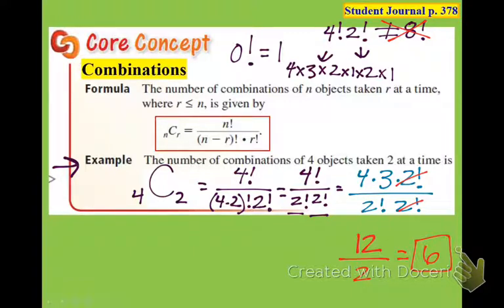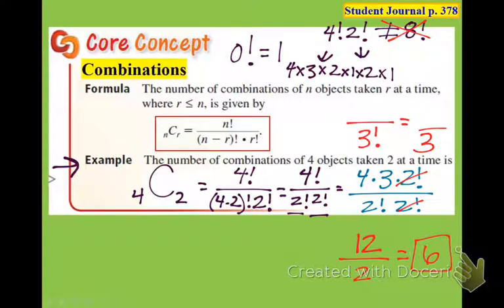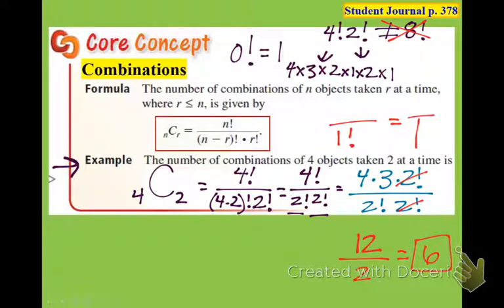A lot of students today made the mistake of having 3 factorial on the bottom and treating it as equal to 3. That is not right. 3 factorial is 3 times 2, which is 6. The only ones that match their factorials: 1 factorial is 1, and 2 factorial is 2. But all the rest — 3 factorial is not 3, 4 factorial is not 4.